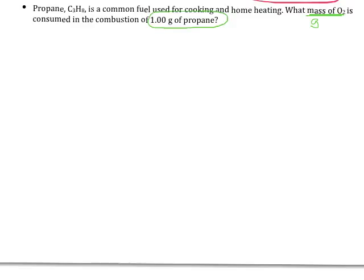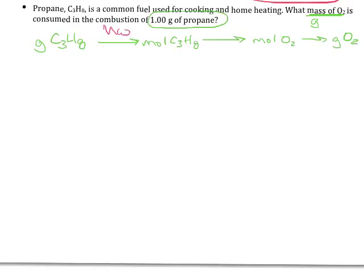Our game plan: start with grams of propane, convert to moles of propane, then moles of propane to moles of oxygen, then moles of oxygen to grams of oxygen. The information we need includes the molecular weight of propane, the mole ratio from the balanced reaction's coefficients, and the molecular weight of O₂. Let's take care of what's still missing — we need to write the balanced chemical equation.